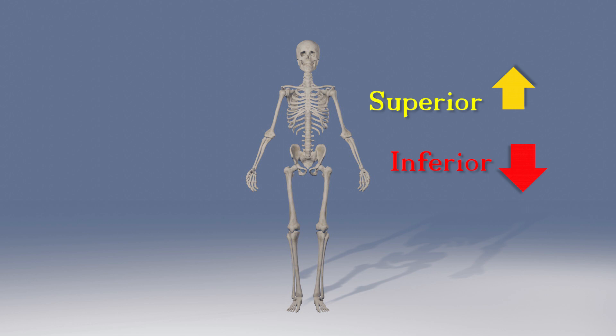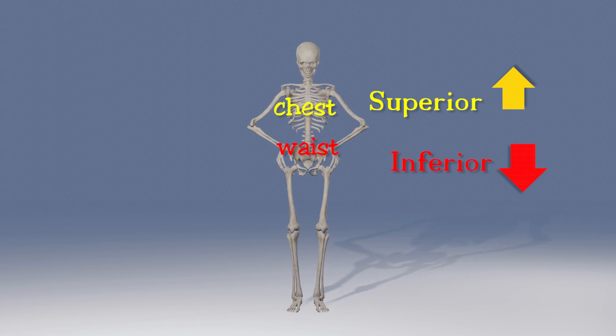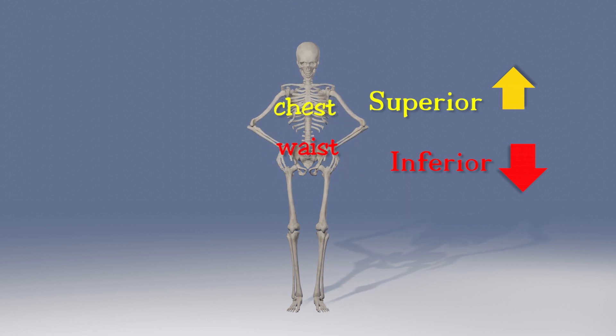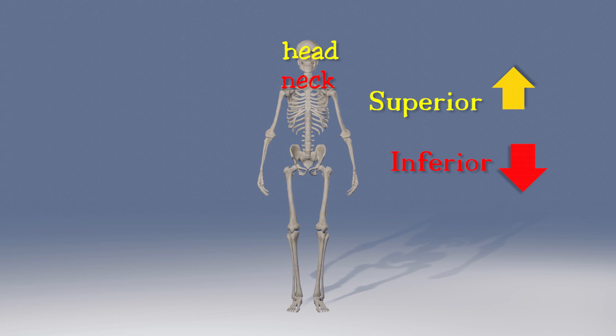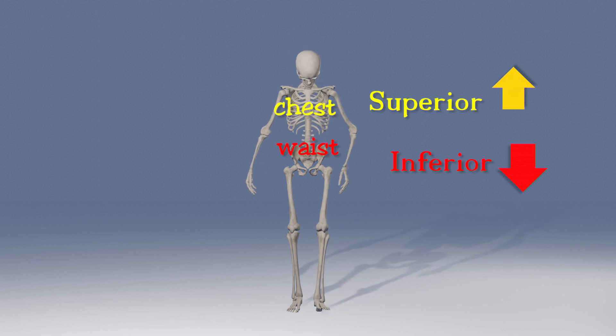Superior. If something is superior to something else, it is above it. The knee is superior to the foot. The chest is superior to the waist. The head is superior to the neck. The opposite of superior is inferior. The foot is inferior to the knee. The waist is inferior to the chest.